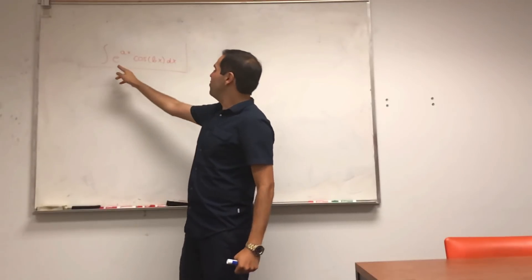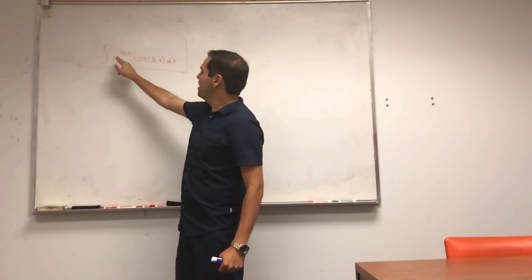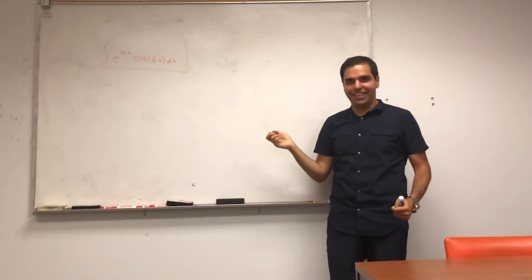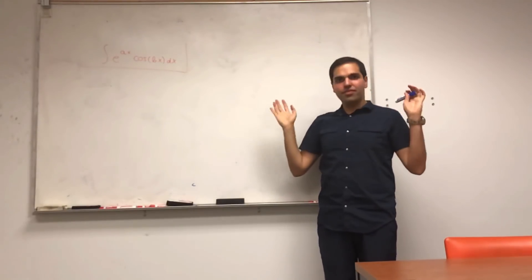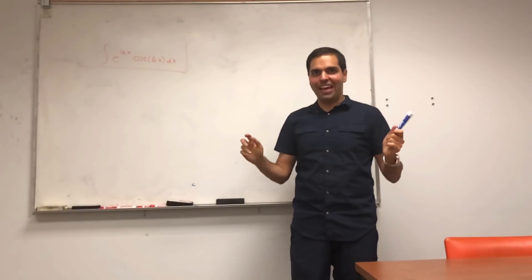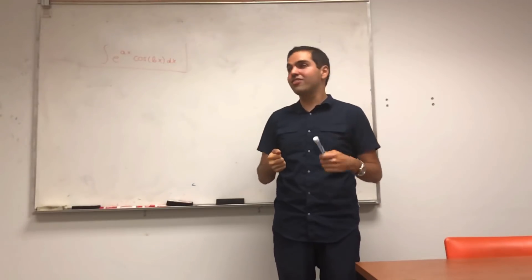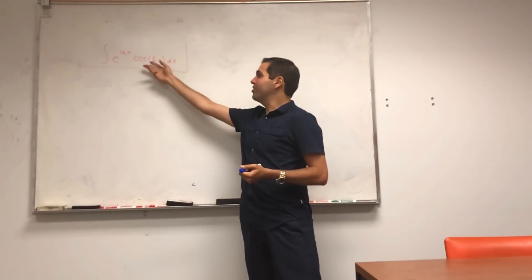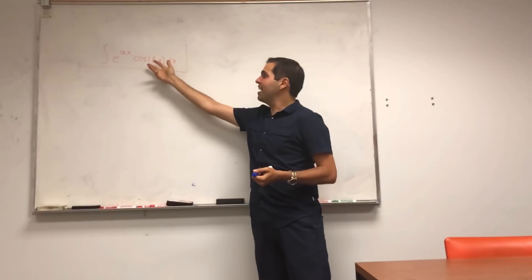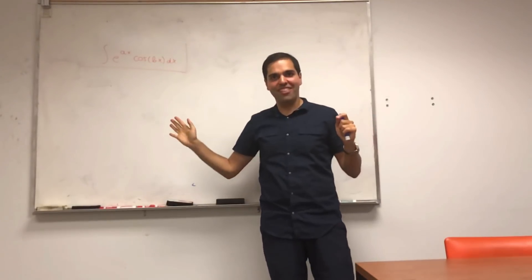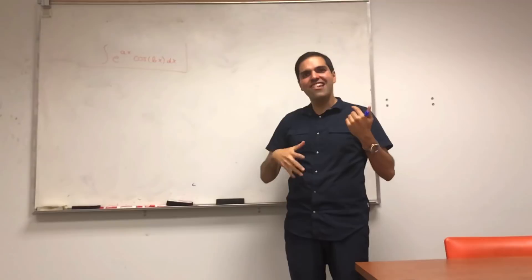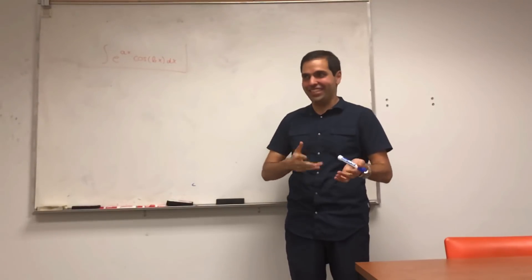More precisely, we want to integrate e to the ax cosine bx dx. You will probably object there are easier methods to doing so, like considering e to the ax plus ibx or something, but what I really want to show you is how linear algebra makes things a bit neater.